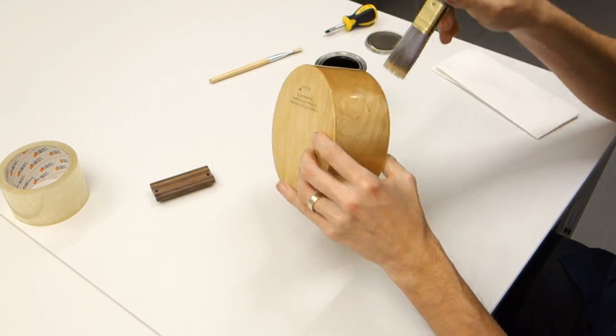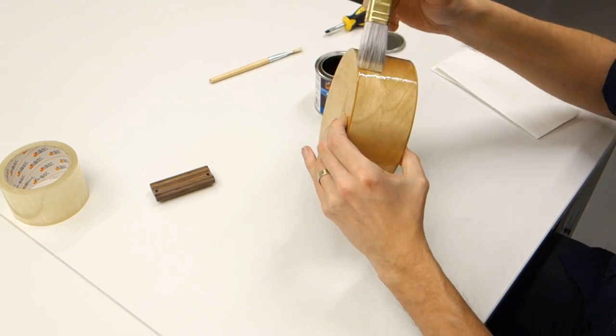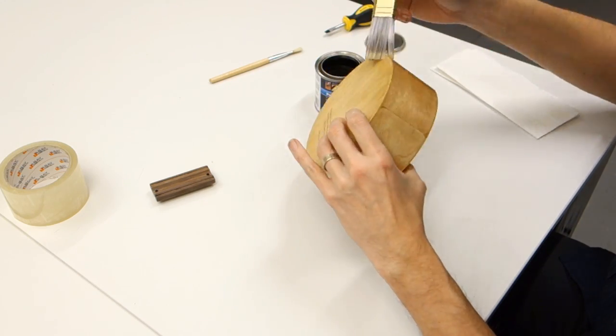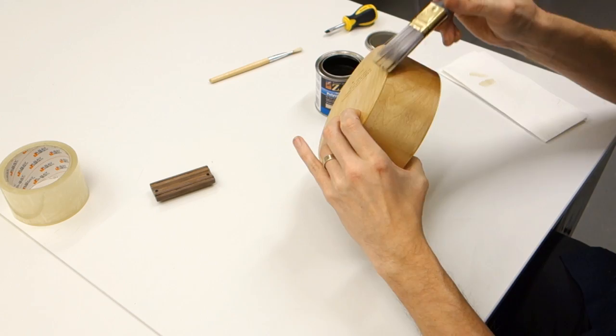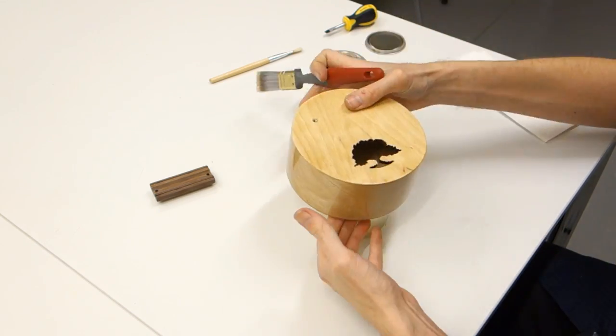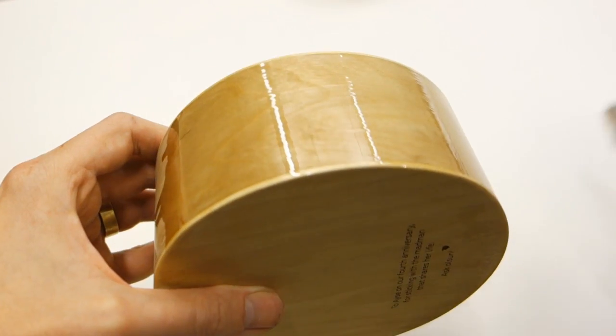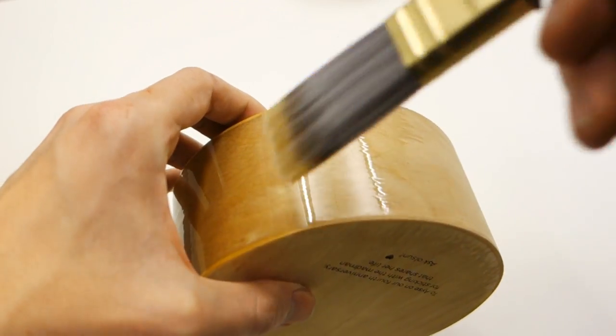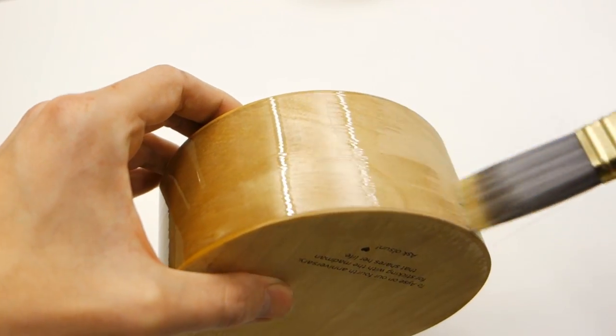Here we're using a durable polyurethane varnish to seal our kalimba. For best results, allow the varnish to fully dry between coats, and give it a light sanding with a fine grit sandpaper between each coat. In the end, I applied 5 coats of varnish with a full day of drying between each coat.